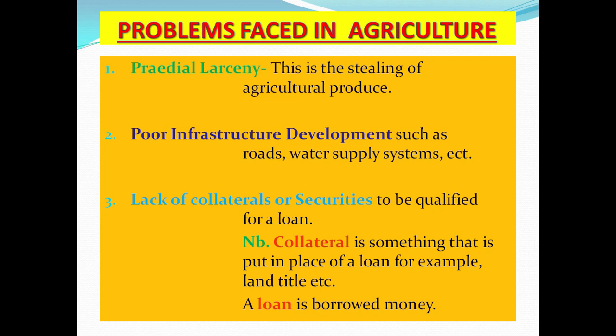Number three: lack of collateral or securities to qualify for a loan. When borrowing money from a bank, most institutions ask for collateral or securities. If farmers don't have these, banks may hesitate to provide loans. Examples of collateral include land titles, which the bank holds temporarily until the loan is paid off.